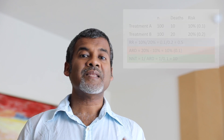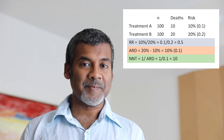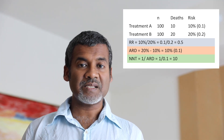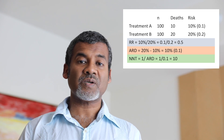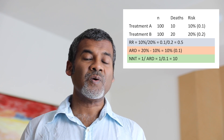How do we calculate numbers needed to treat? Quite simply, that is 1 divided by the absolute risk difference. So here it would be 1 divided by 0.1, which equals 10. The numbers needed to treat is 10 — meaning that for every 10 patients treated with the new treatment, there would be 1 additional person who would survive. So now you know risk, relative risk or risk ratio (RR), absolute risk difference, and how to calculate and interpret numbers needed to treat.